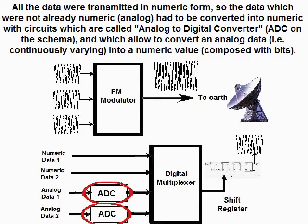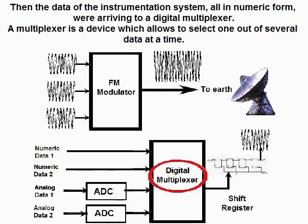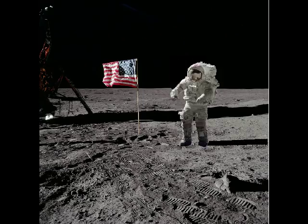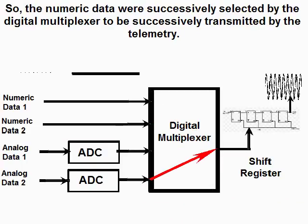These converters allowed converting an analog signal that is continuously varying into a numeric value composed of bits. Then the data of the instrumentation system, all in numeric form, were arriving at a digital multiplexer — a device which allows selecting one out of several data at a time. The numeric data were successively selected by the digital multiplexer to be successively transmitted by the telemetry.